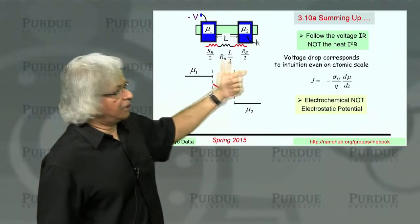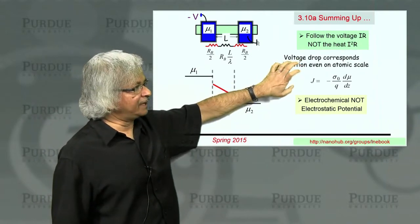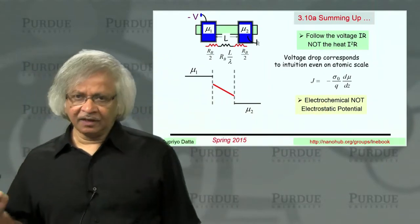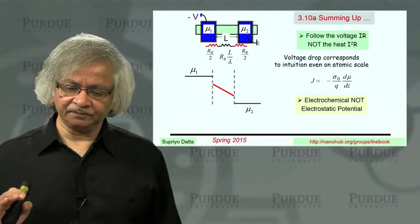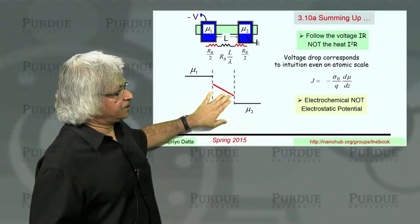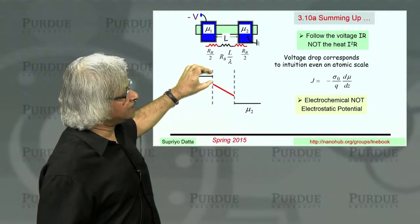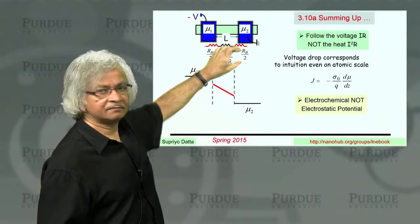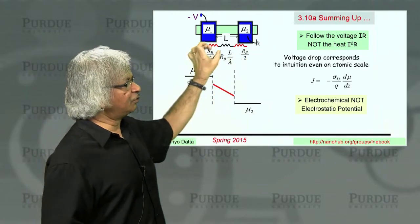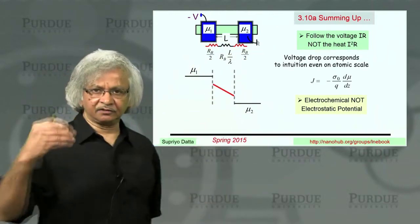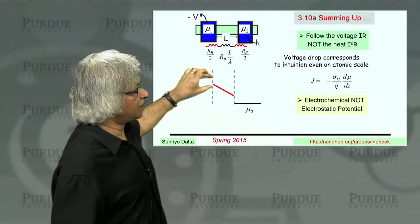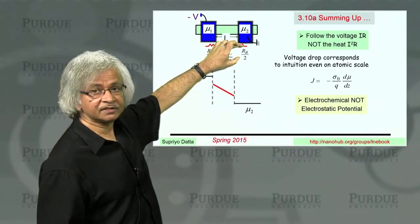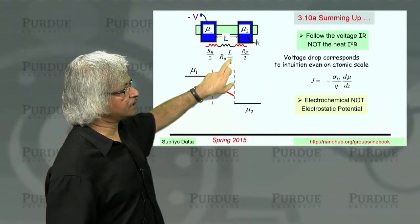Now, the second important point was that what is voltage? And there what I made a point of is that we should associate voltage with the electrochemical potential and not the electrostatic potential. Because if you looked at the electrochemical potential in a device like this, you'd see these drops at the two ends, which you could then associate it with the resistances. Because this is like a series circuit. When a current flows, there's a voltage drop associated with each resistance, current times resistance. So anytime you see a voltage drop like this, you say there must be a corresponding resistance.